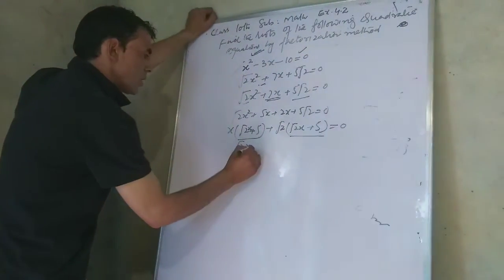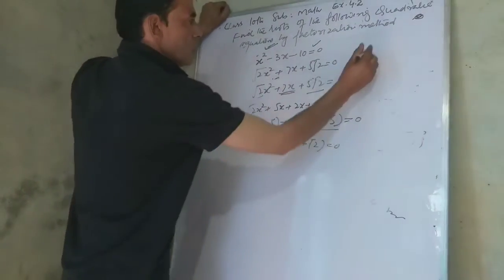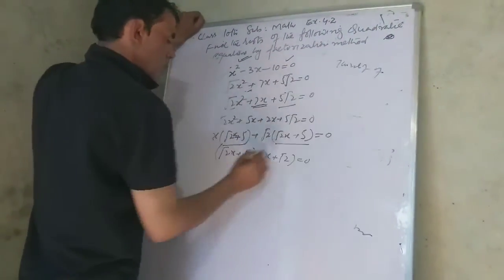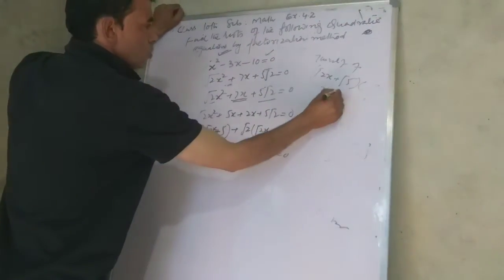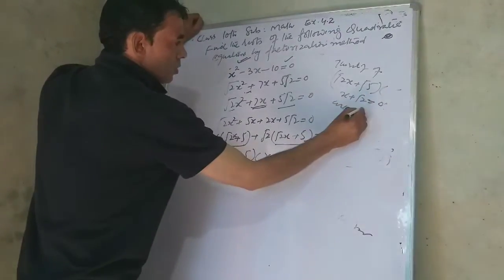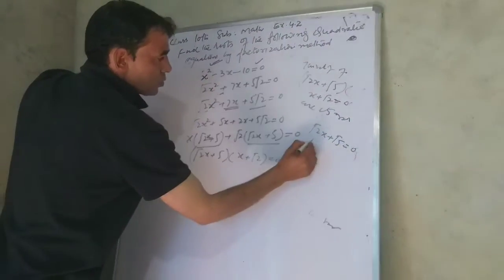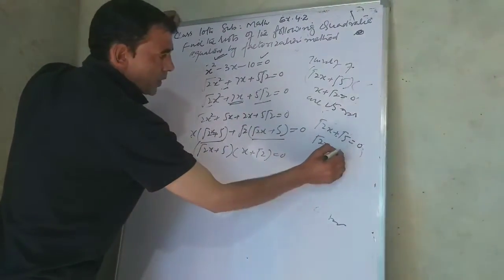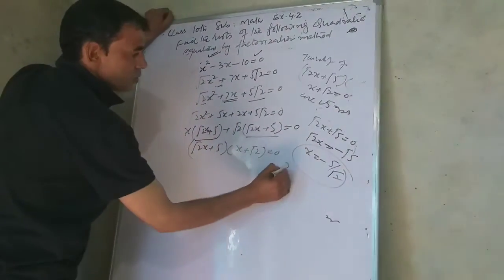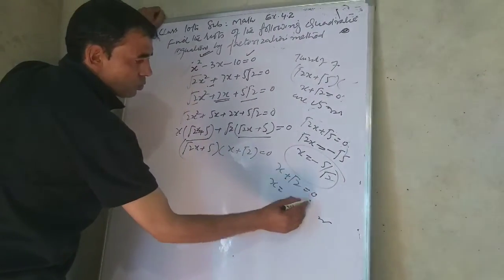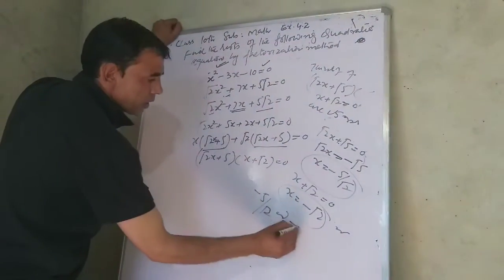This factors to (√2x + 5)(x + √2) = 0. Therefore, √2x + 5 = 0 gives x = -5/√2, and x + √2 = 0 gives x = -√2. So -5/√2 and -√2 are its roots.